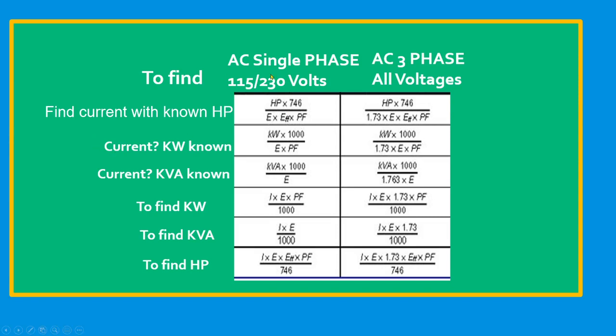For example, our voltage is 230 volts. So we're going to put here 230 volts. Efficiency, for example, 0.90 and our power factor is 80% or 0.8. Then if we calculate it, we can find the current.